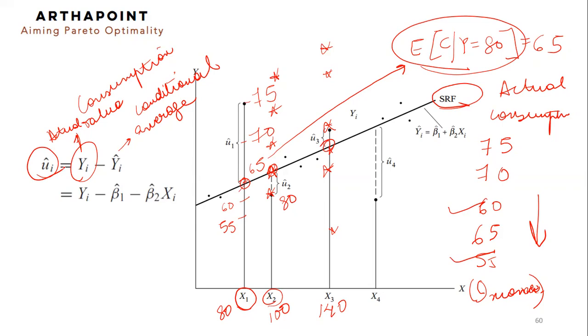The difference between the actual value and the conditional value is nothing but my error term. The error term is the difference between the actual consumption and the expected consumption. So for this individual who consumed 75, whereas on average, consumption was 65. For the income group that had an income of 80, the gap is 10.